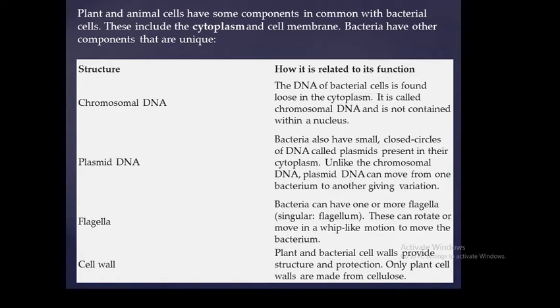Let's talk about each one in detail. Chromosomal DNA: the DNA of bacterial cells is found loose in the cytoplasm and is not contained within a nucleus. Plasmid DNA: bacteria also have small closed circles of DNA called plasmids, which are present in their cytoplasm.